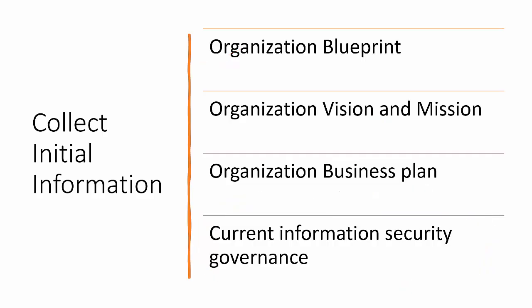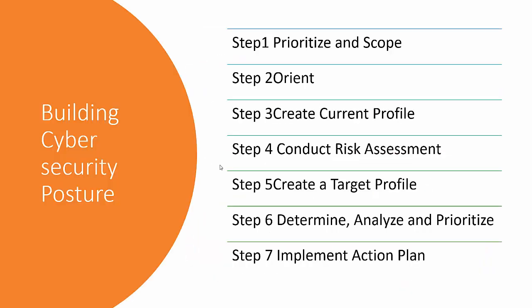The first step to implementing the NIST Cybersecurity Framework in an organization is Prioritize and Scope. We request the organization to scope and prioritize their activities — it's not necessary to implement the entire framework at once. If a company doesn't have a particular process, there's no need to implement a control for it. We prioritize business mission objectives and high-level organizational priorities.